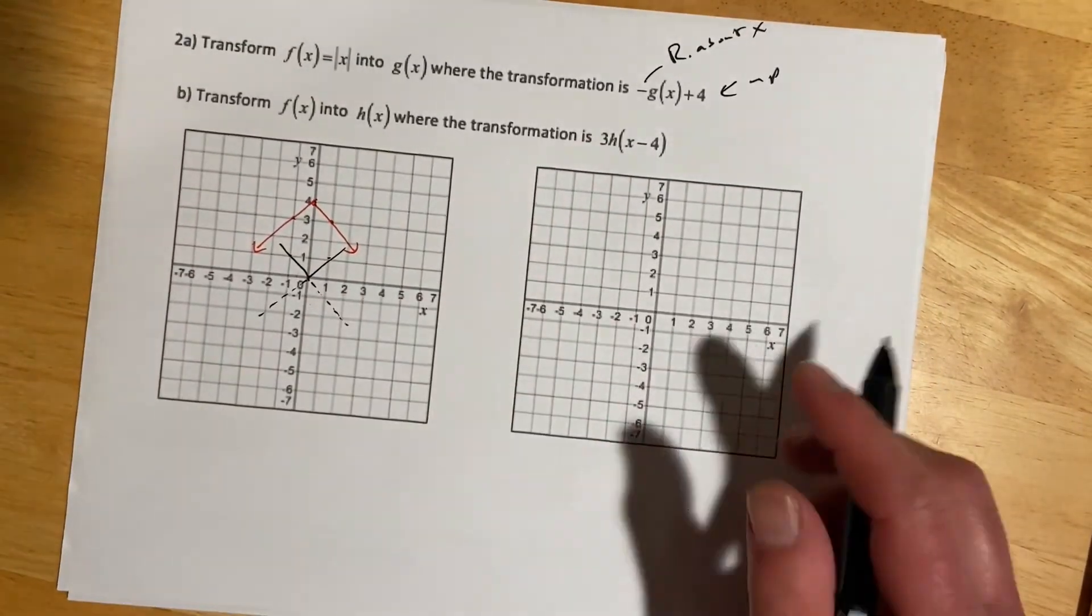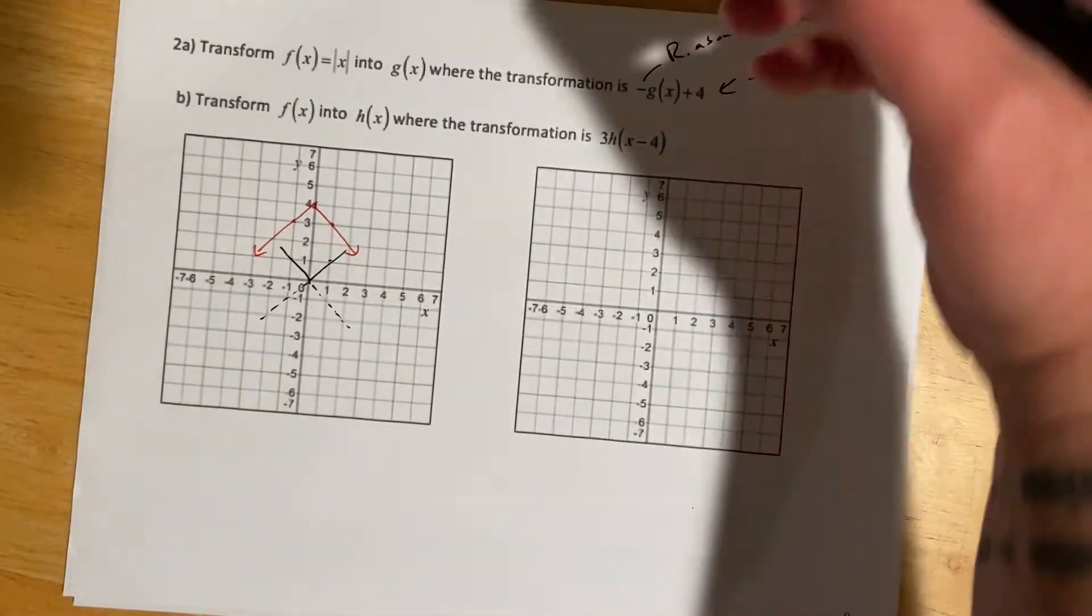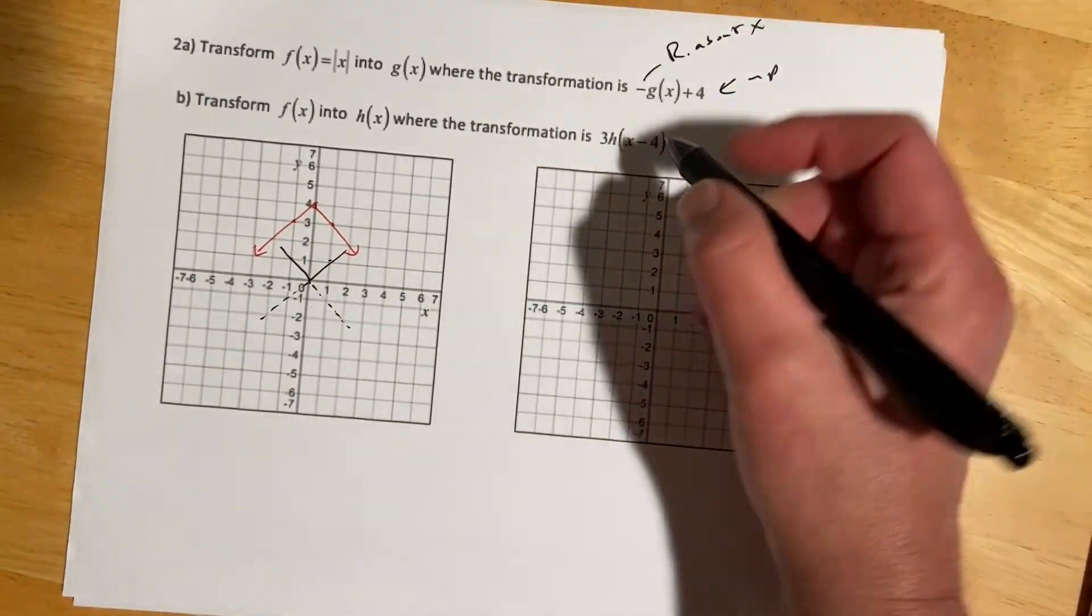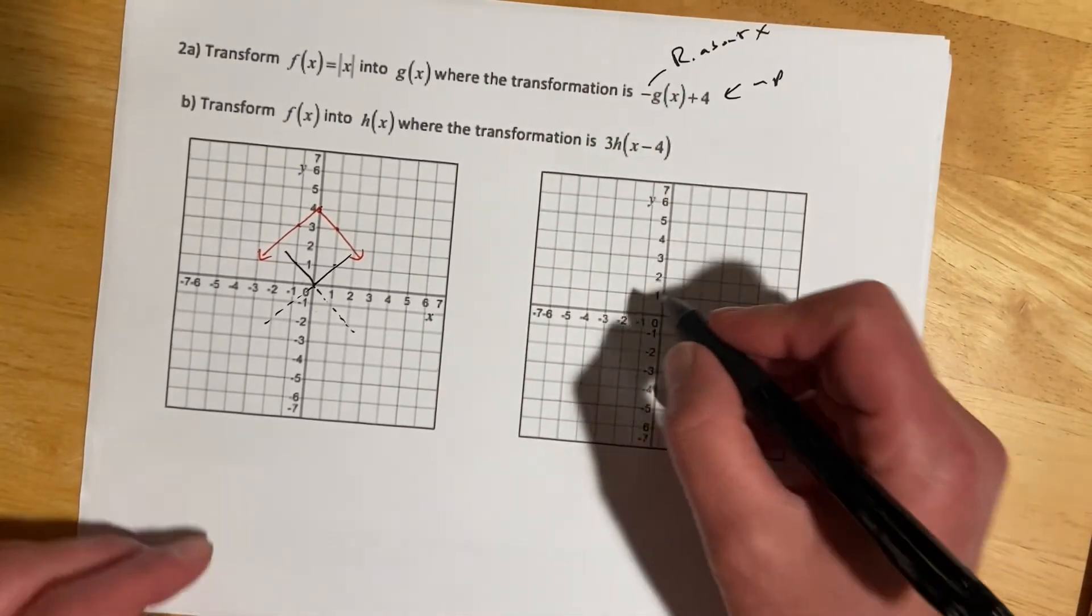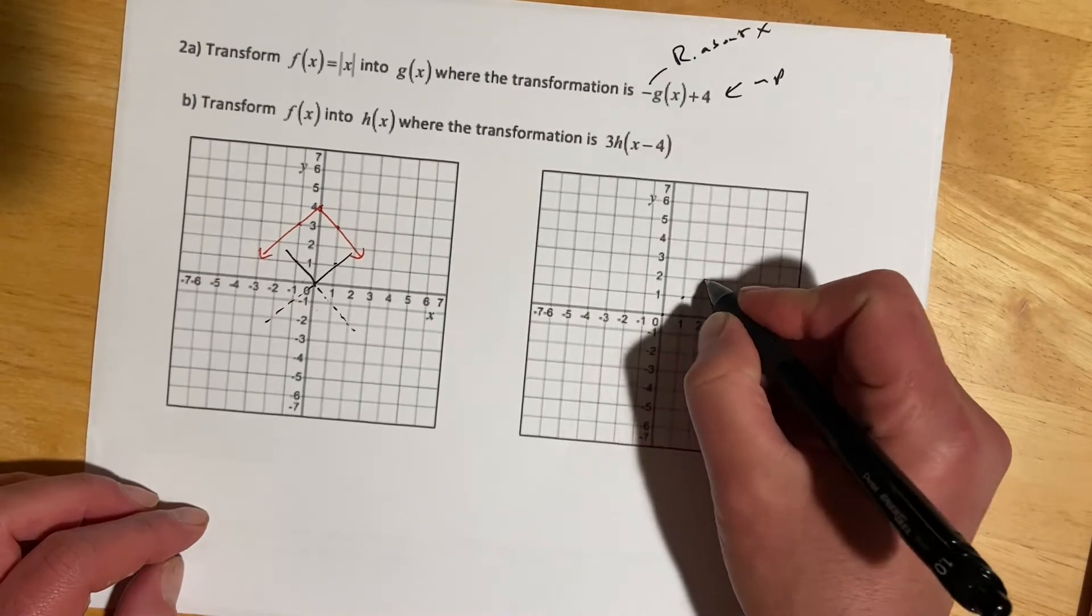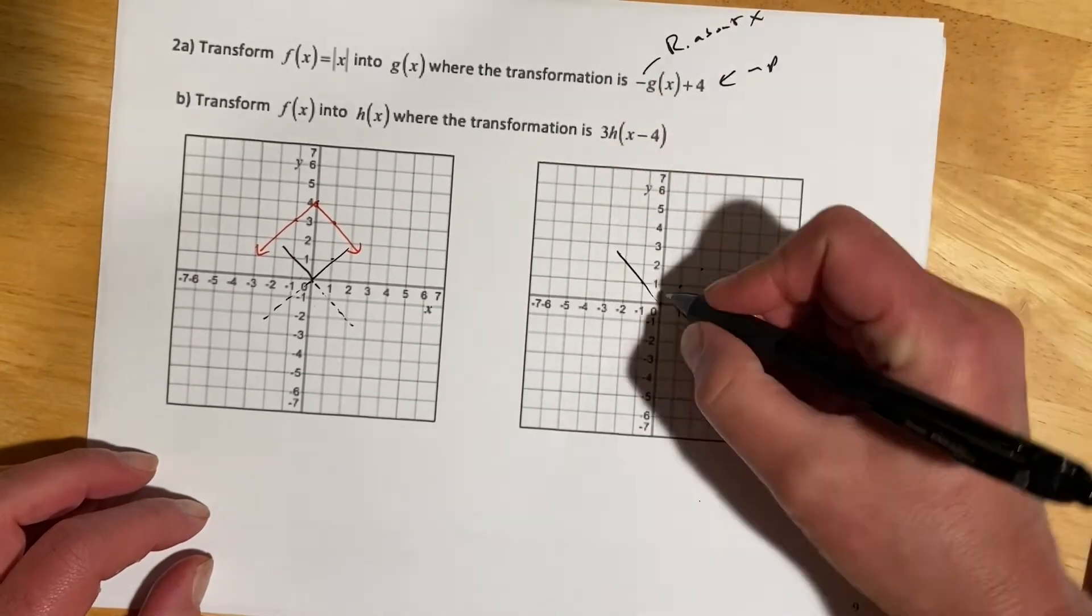Here we're stretching this, and this is a vertical stretch because it's outside. It's going to get a factor of 3 bigger, and that minus 4 on the inside will go right 4. Here's the parent function.